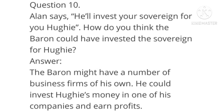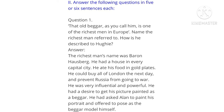Question number 10: Alan says he will invest your sovereign for Huey. How do you think the Baron could have invested the sovereign for Huey? Answer: The Baron might have a number of business firms of his own. He could invest Huey's money in one of his companies and earn profits. Next, second section — answer the following questions in 5 or 6 sentences each. That means we have to write long answers for these questions.